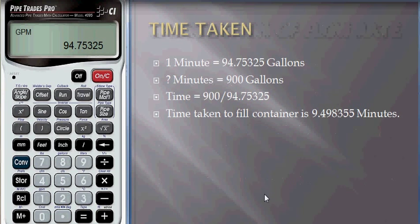So we have the flow rate now. For 1 minute, the pipe will fill 94.75325 gallons. To fill 900 gallons, let's calculate the time: 900 divided by 94.75325.